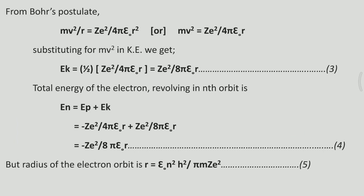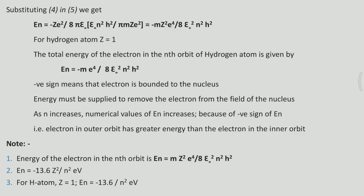The total energy of the electron in the nth orbit is the sum of potential and kinetic energy: E = −Ze² / (4πε₀r) + Ze² / (8πε₀r). On simplification, we get E = −Ze² / (8πε₀r), where r is the radius of the electron's nth orbit, given by r = ε₀n²h² / (πmZe²). On substitution of this value, the total energy becomes: Eₙ = −mZ²e⁴ / (8ε₀²n²h²).